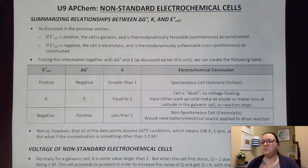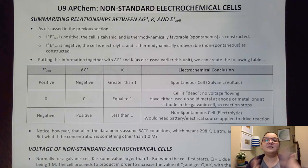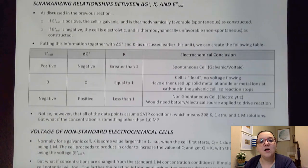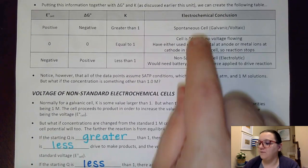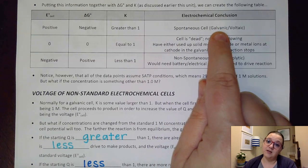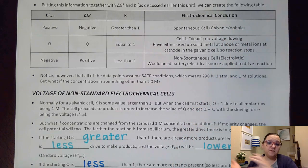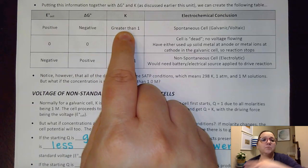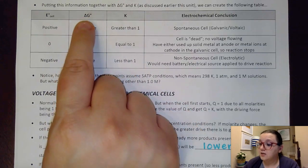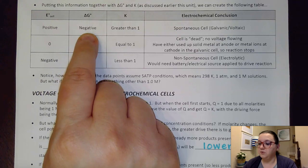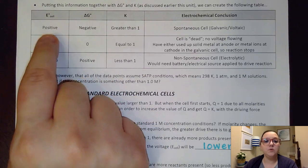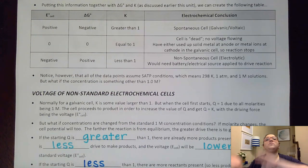Because there's a tie between cell potentials and thermodynamic favorability, there are connections between delta G and cell potentials, and also between those two values and K. For a spontaneous cell — also known as a galvanic or voltaic cell — we expect a K value greater than 1, indicating product favorability; a delta G that's negative; and a cell potential that's positive, showing there is a drive to move electrons for the reaction in the direction written.